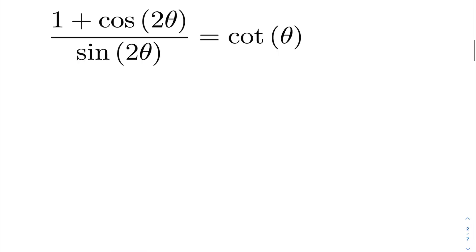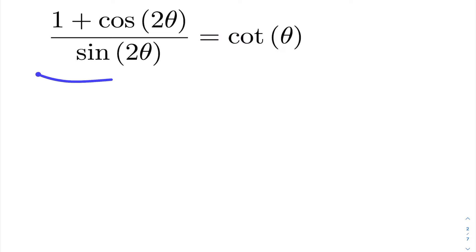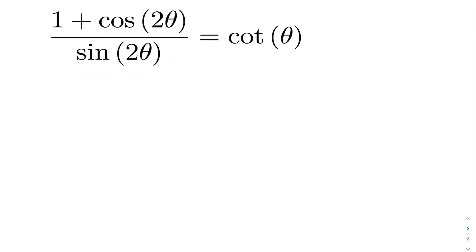In the next example, we want to show that one plus cos 2theta, all divided by sine 2theta, equals cotangent theta. I'm going to work with the left hand side because there's more going on there. With the right hand side there isn't much to work with, whereas on the left hand side I can see double angle formulas to substitute in.